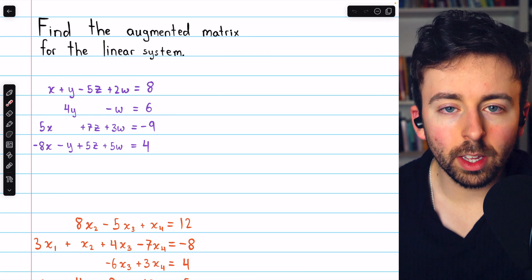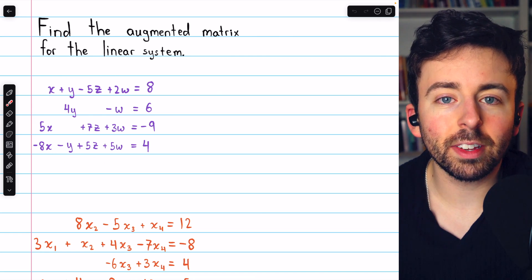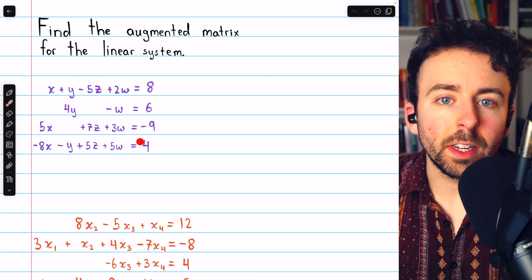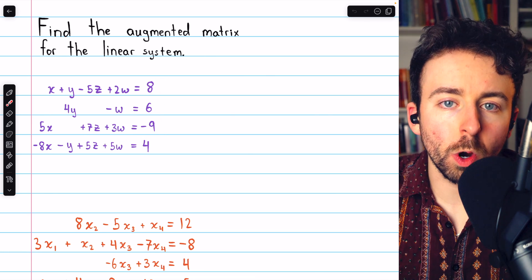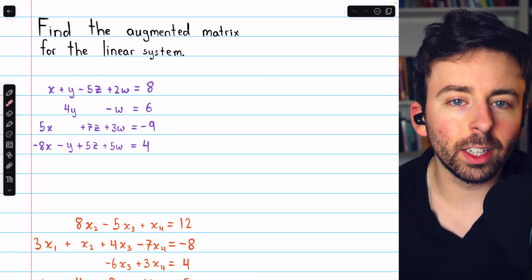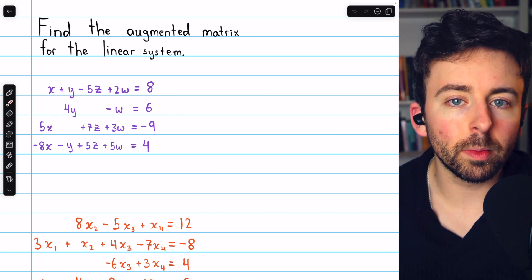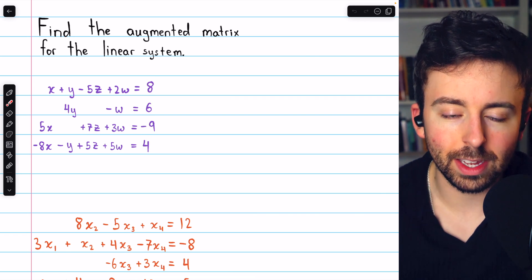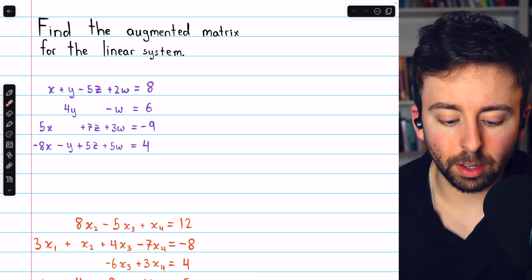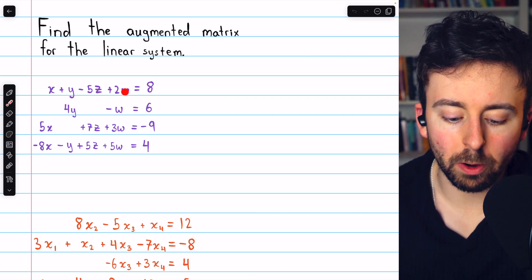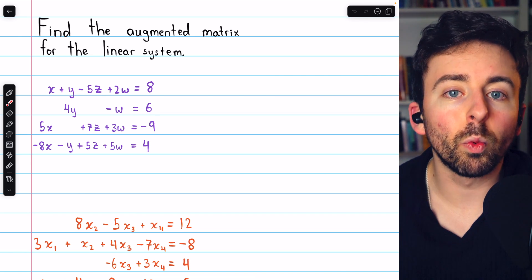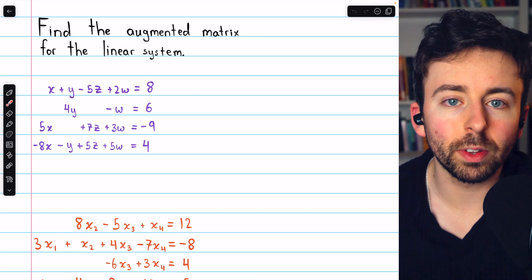Beginning with this one, you should know that an augmented matrix has one row for each equation, so our augmented matrix will have four rows. Then, for the columns, it needs a column for each variable in the system, as well as a column for the constants. In this system, we have four variables, so our augmented matrix will have five columns, one for each of the variables and one for the constants.